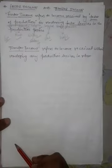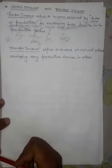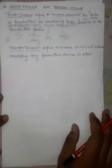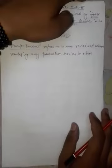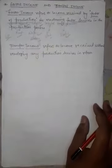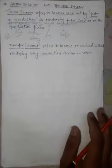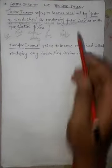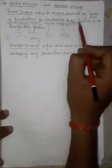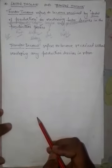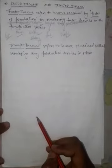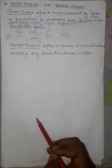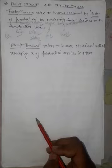Now it has become easy to understand transfer income. Where we did some work and received income — that is factor income. Factor services ke baad factor income mila. But when we did no work and still received income — that is transfer income.